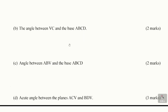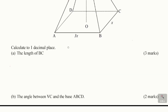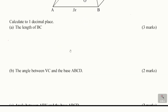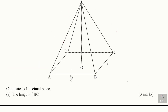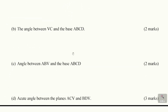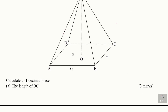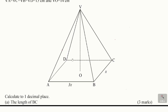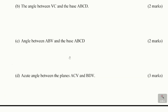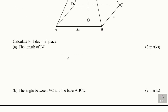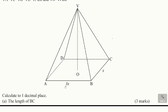B, the angle between VC and the base ABCD. Then we have part C, the angle between plane ABV and the base ABCD. Then the last one is the acute angle between the planes ACV and BDV.